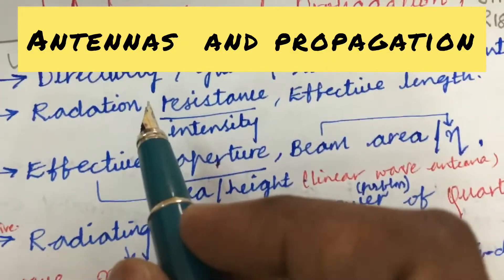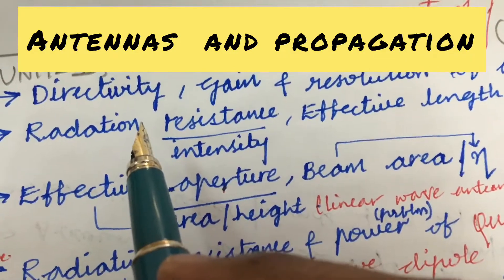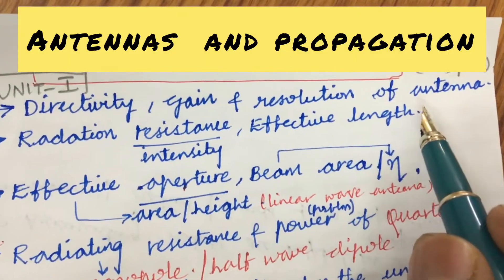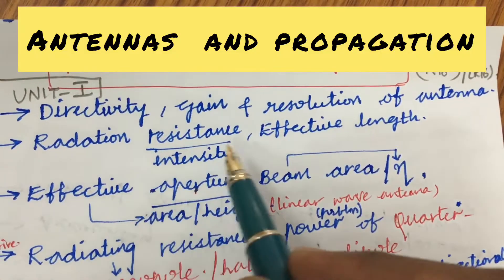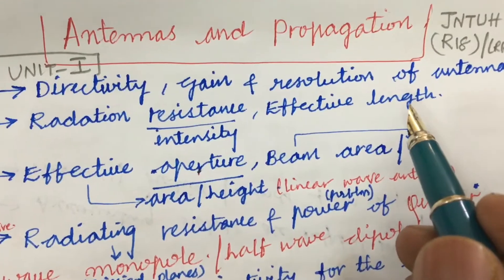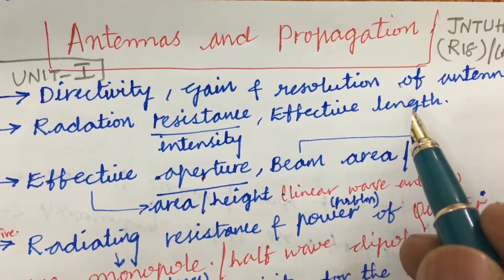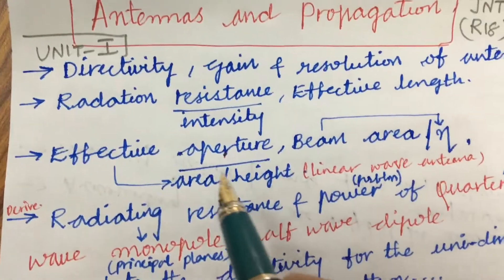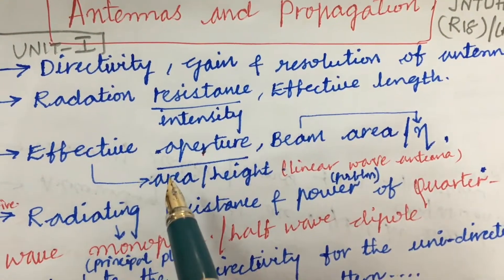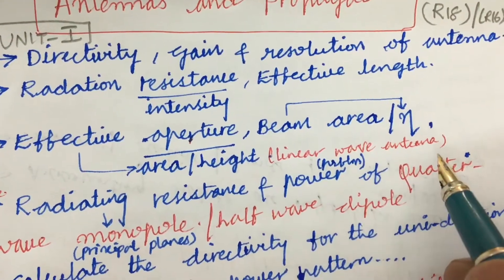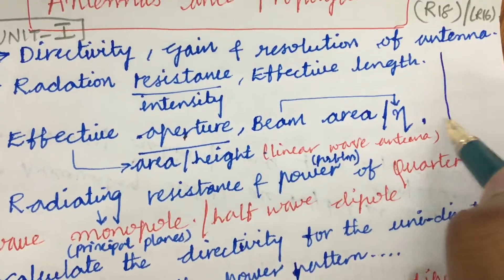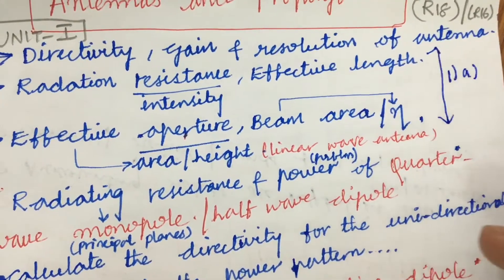Let us look at the first unit. Unit 1 covers definitions of directivity, gain, and resolution of an antenna, as well as radiation resistance, radiation intensity, effective length, effective aperture, effective area, effective height for a line wave antenna, beam area, and efficiency. This may be one of the 1A questions in your question paper for sure.